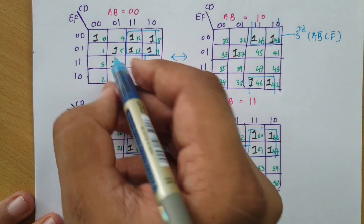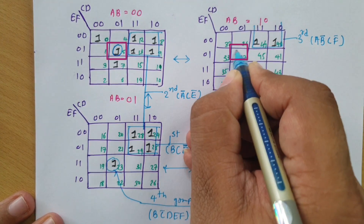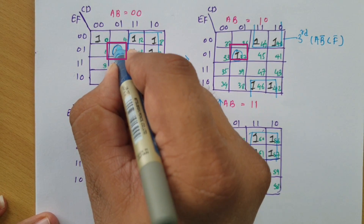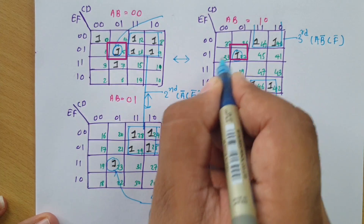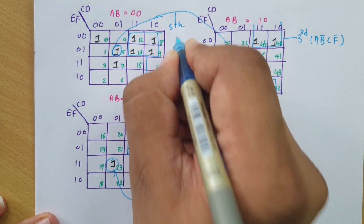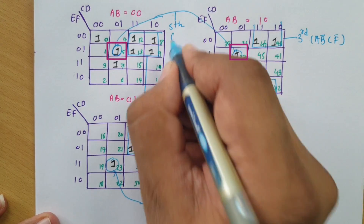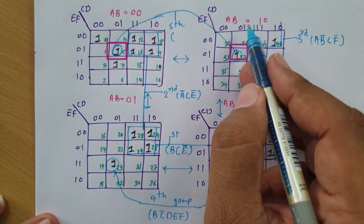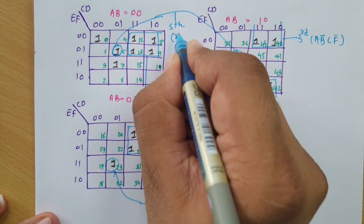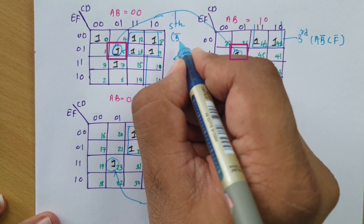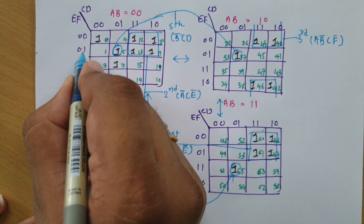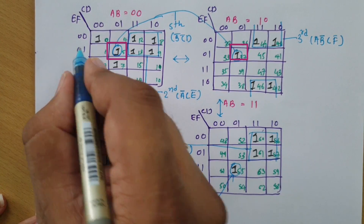Now to cover the remaining cells: this and this and this are getting combined — this is my fifth group. In this fifth group, AB is 00 and 10, so B is 0 meaning B̄, with A changing. CD is 01, so C̄·D. EF is 01, so Ē·F. Therefore, the fifth group gives B̄·C̄·D·Ē·F.